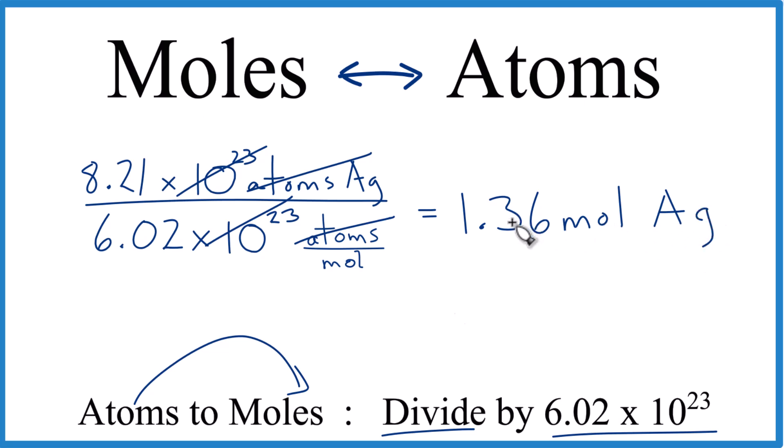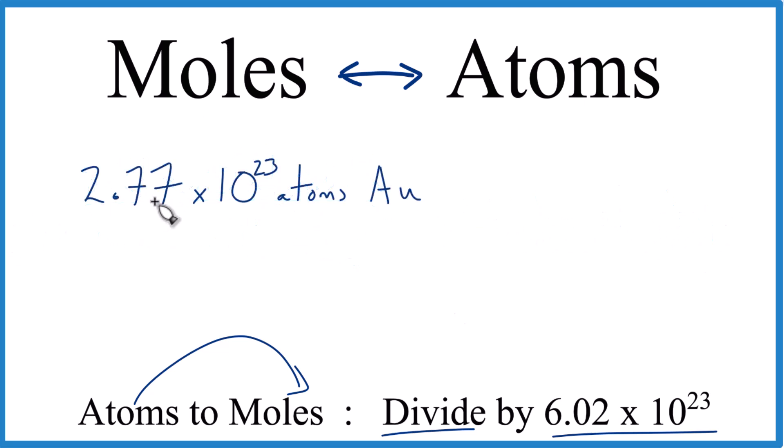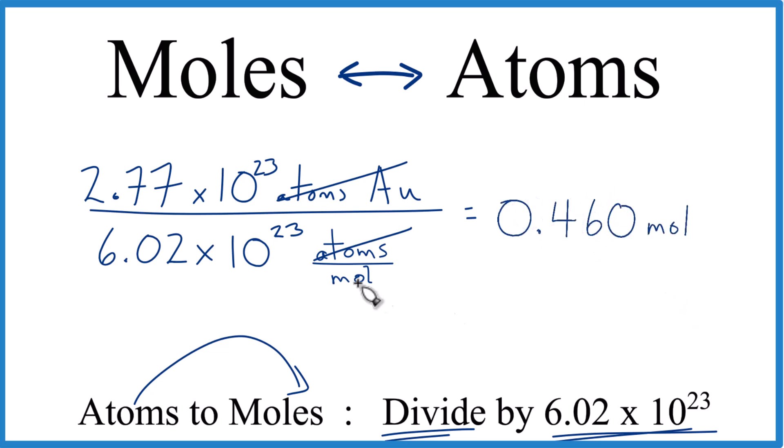So now you give it a try. So pause and convert 2.77 times 10 to the 23rd atoms of gold here to moles. So atoms on top, right here on top, left with moles. 2.77 divided by 6.02. That equals 0.46, and that's moles. That's what's left.